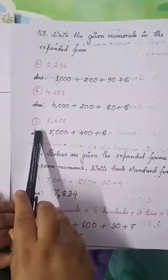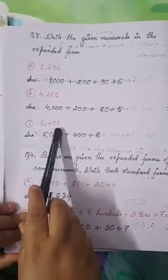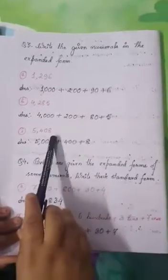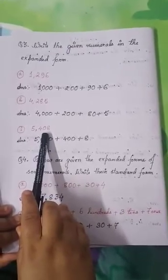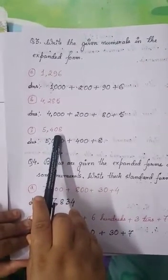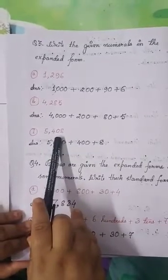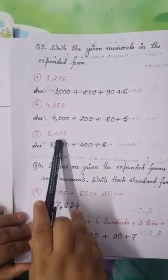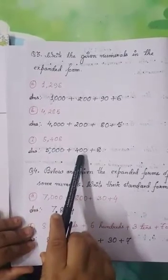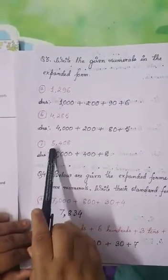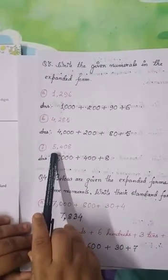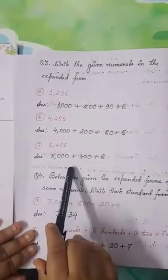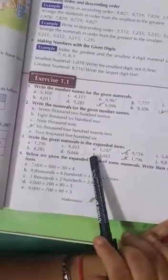Question number C is 5408. The value of 8 is 8, as it is in the 1's place. Next we come to the digit 0, which is not necessary to write down here, because the value of 0 is 0. Then the digit 4 is in the 100's place, so the value of 4 is 400. And 5 is in the 1000's place, so the value of 5 is 5000. In this way, question number 3 can be done by you at your home.